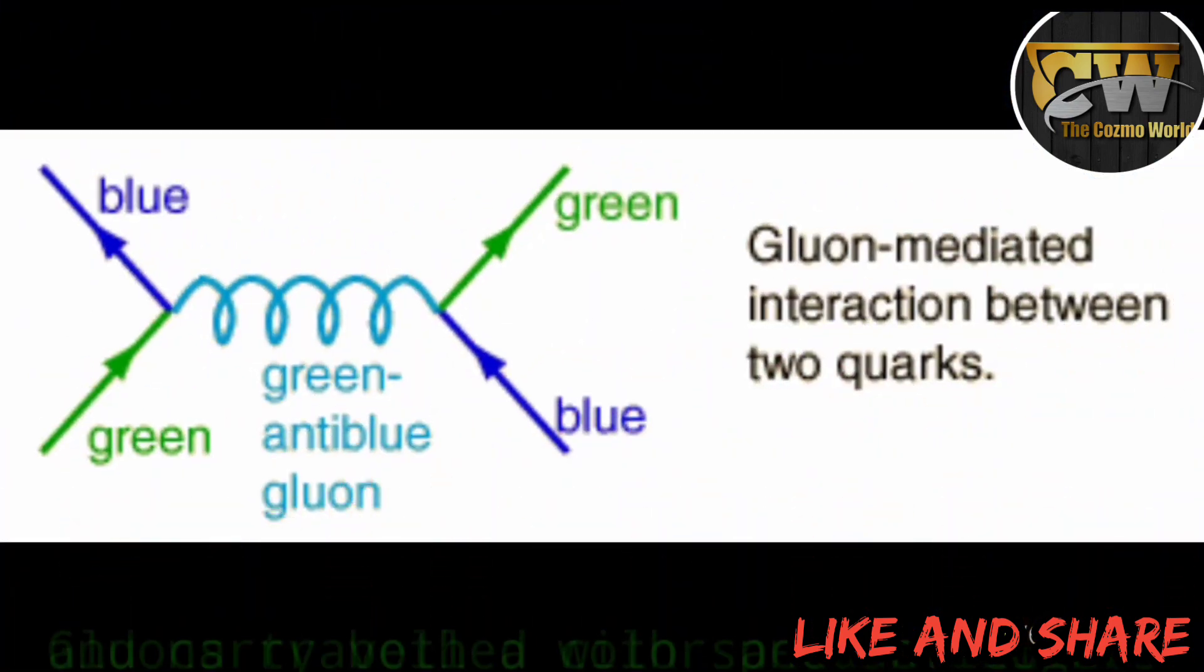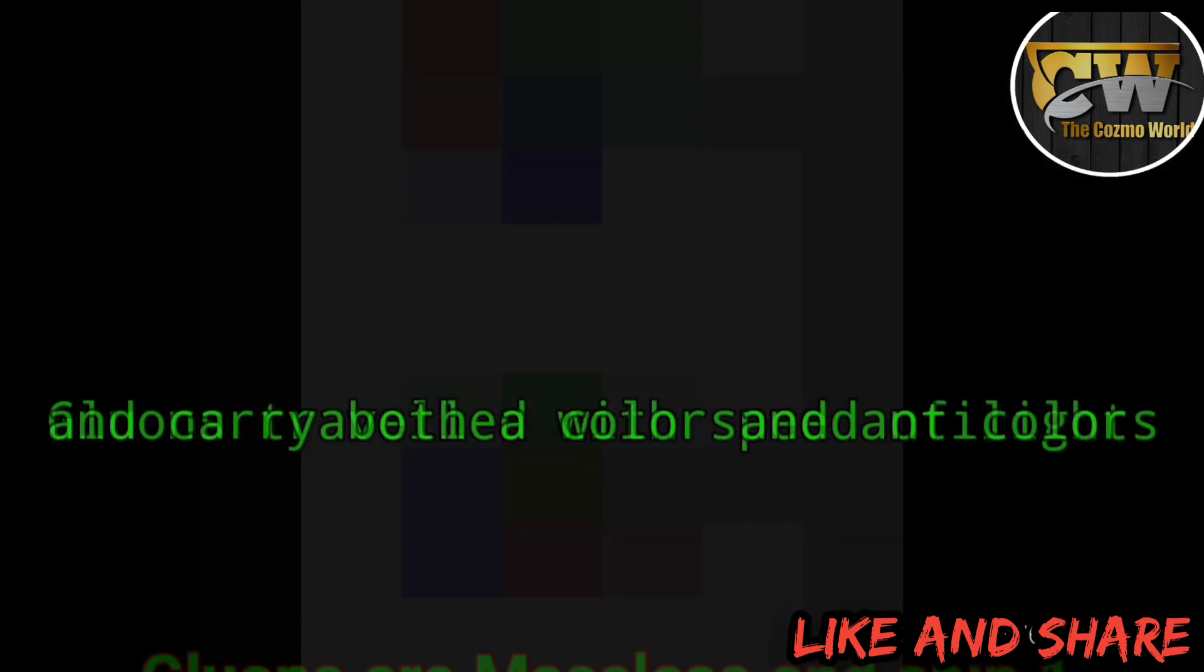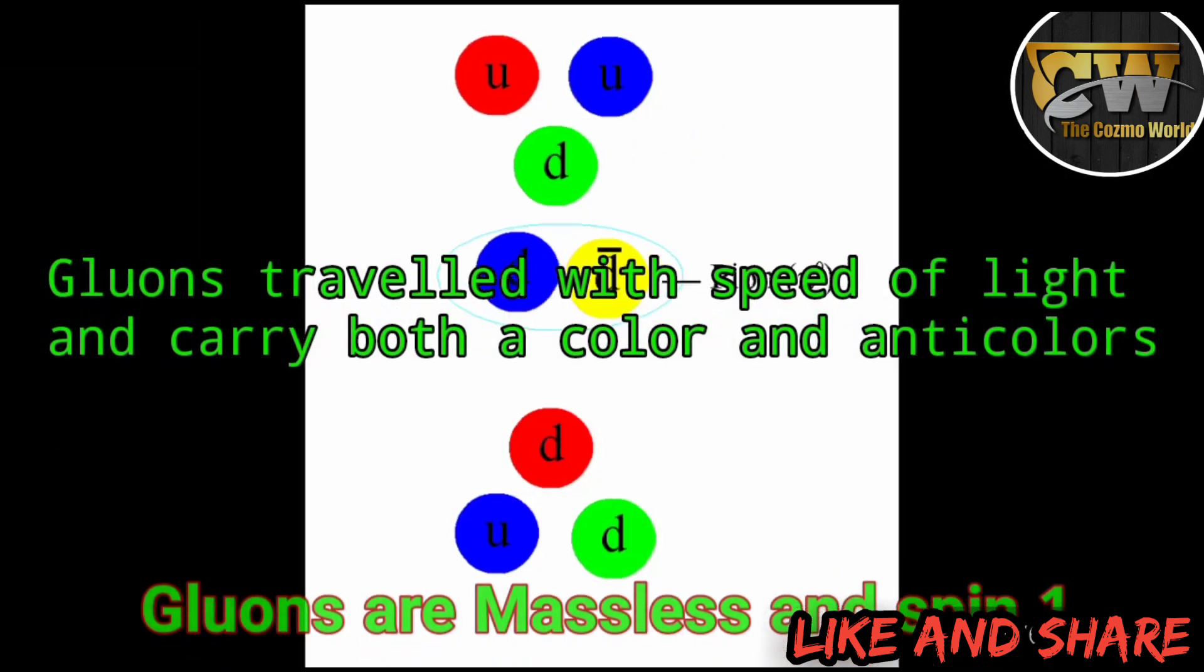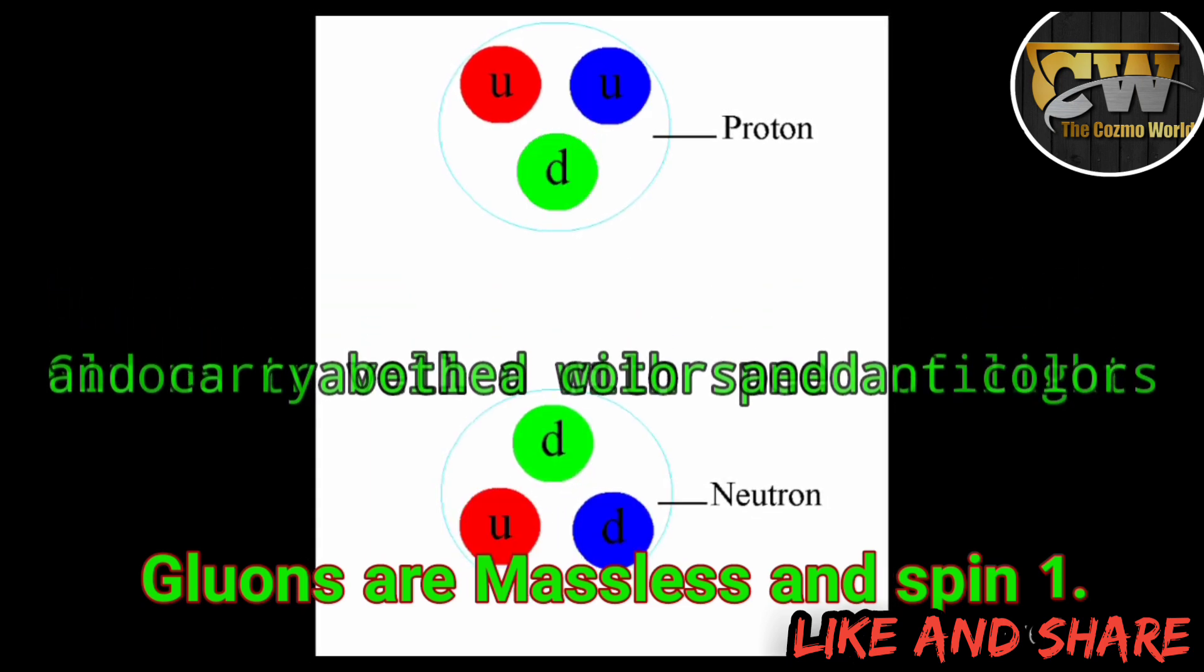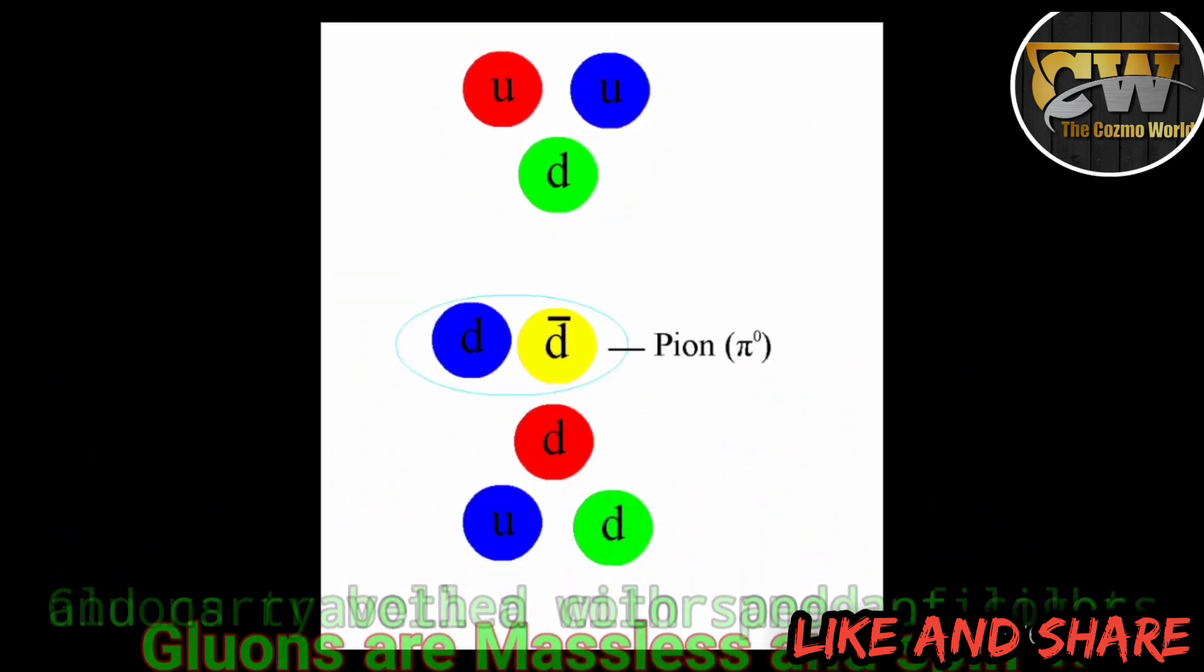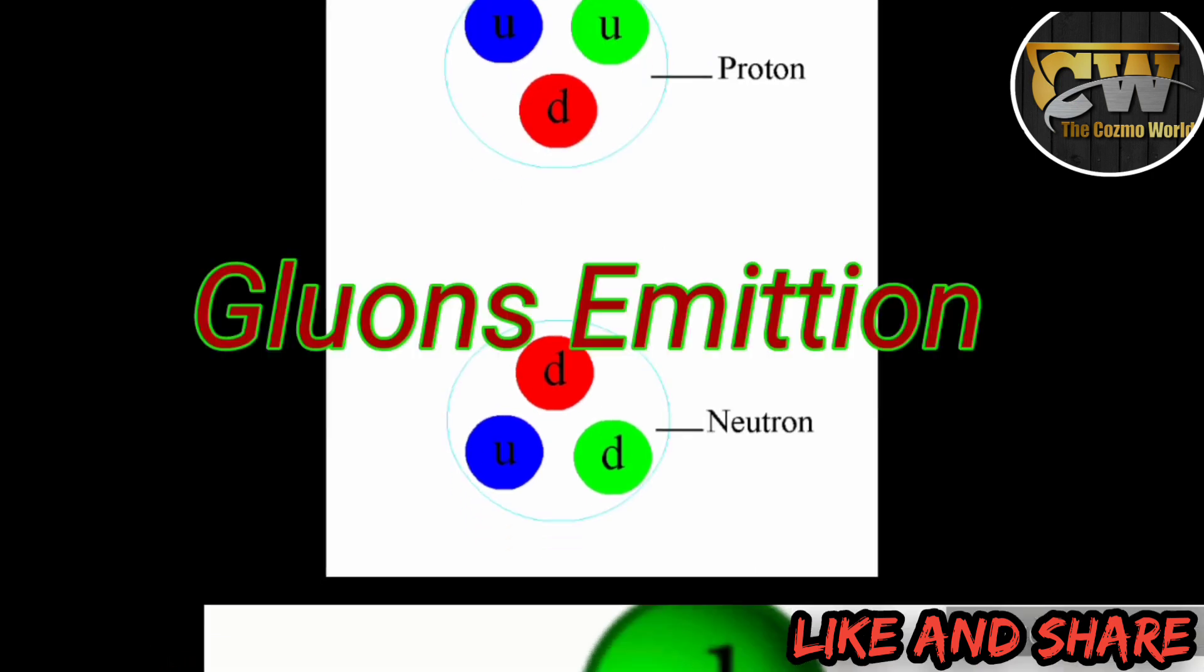Colored quarks attract one another by exchanging gluons, of which there are eight types. Gluons are massless, have spin one, travel at the speed of light, and carry both a color and a different anti-color.